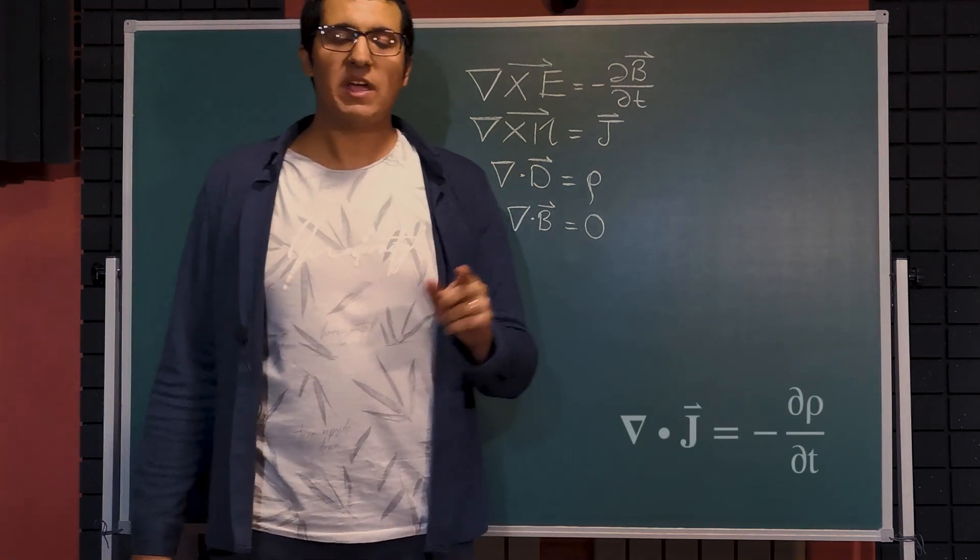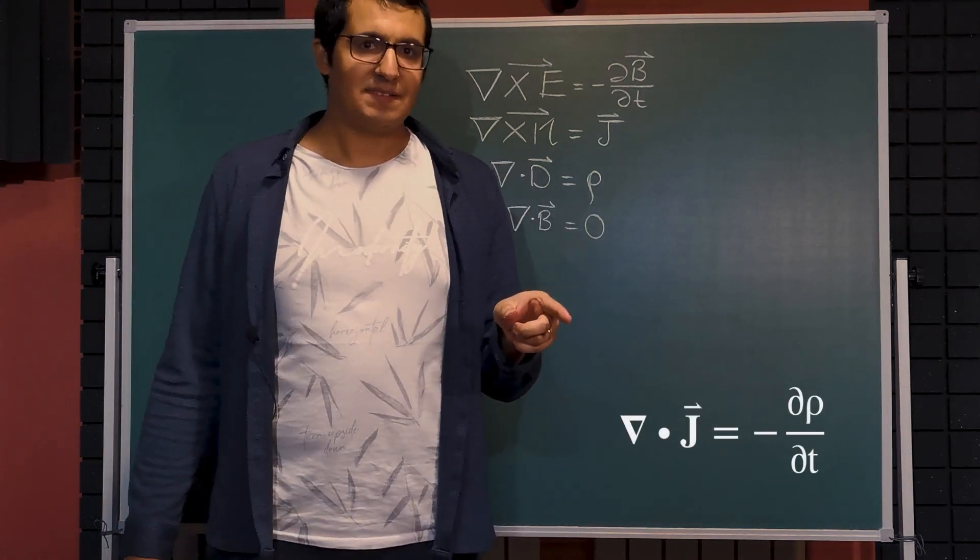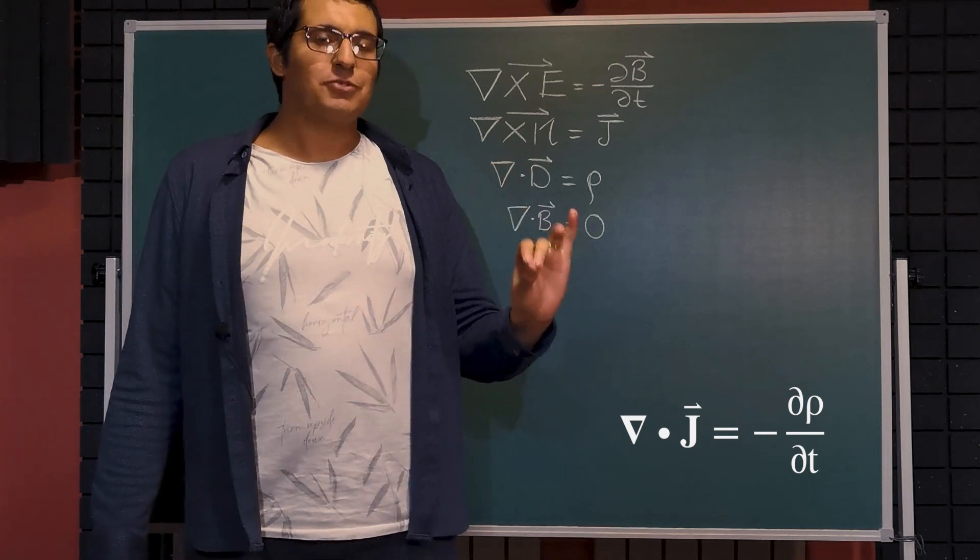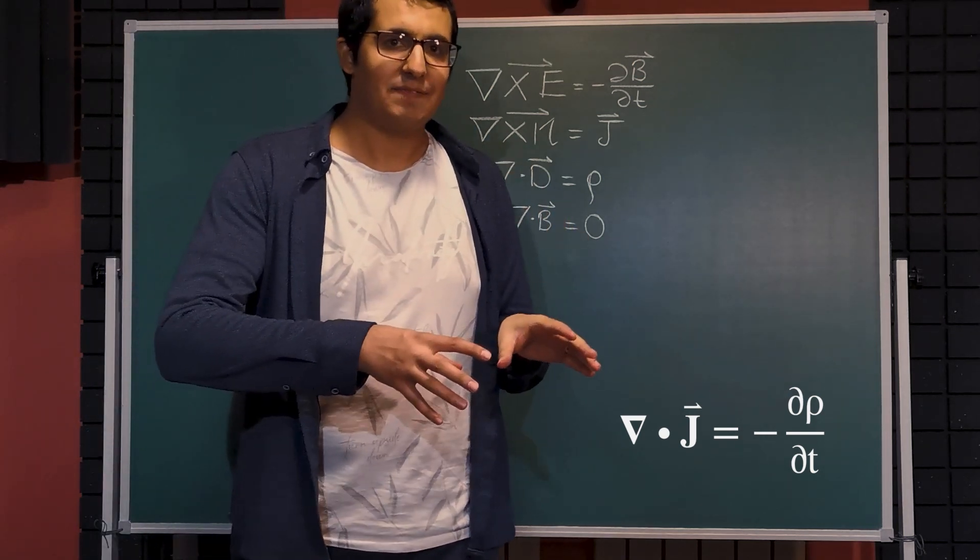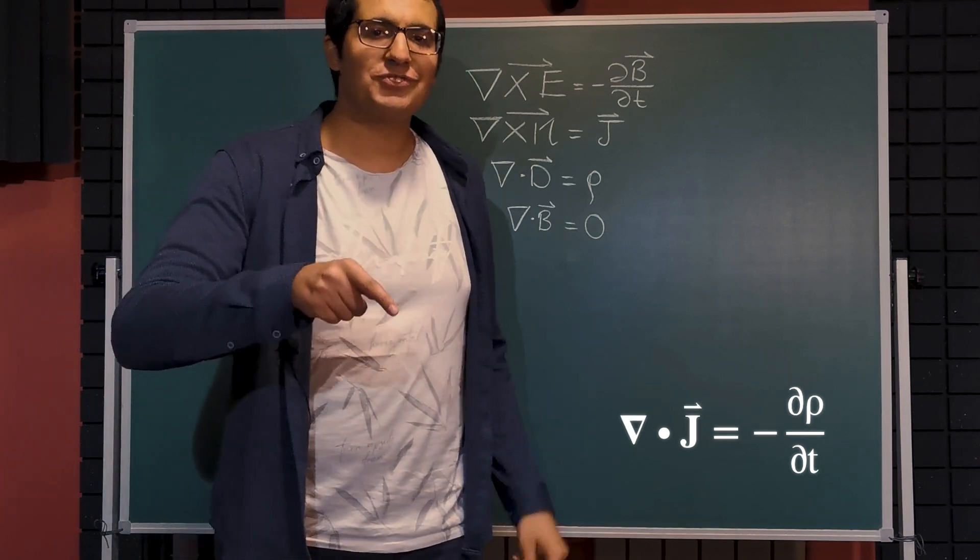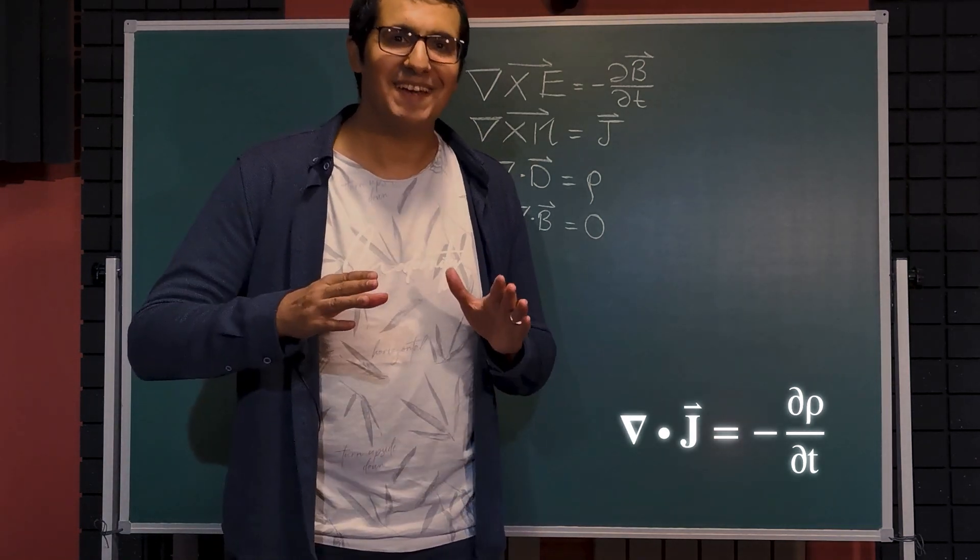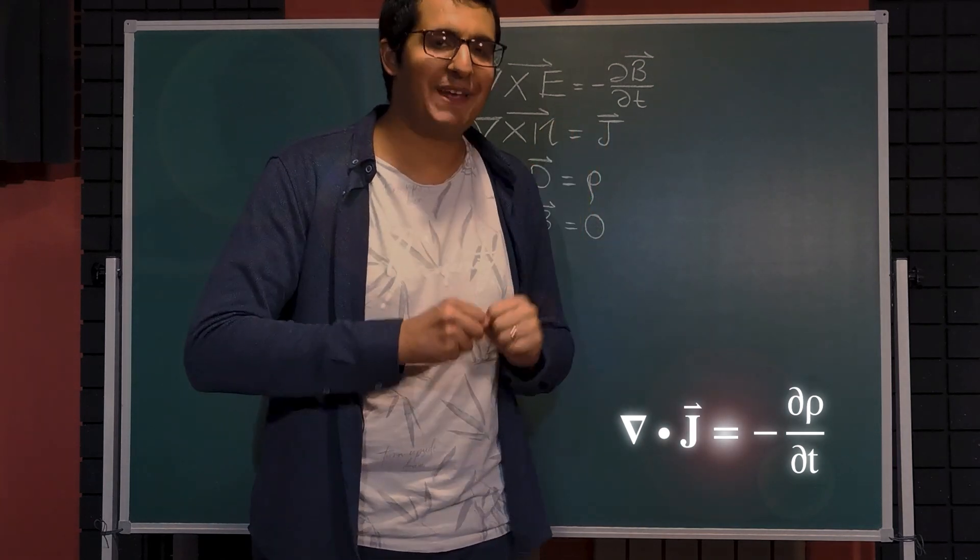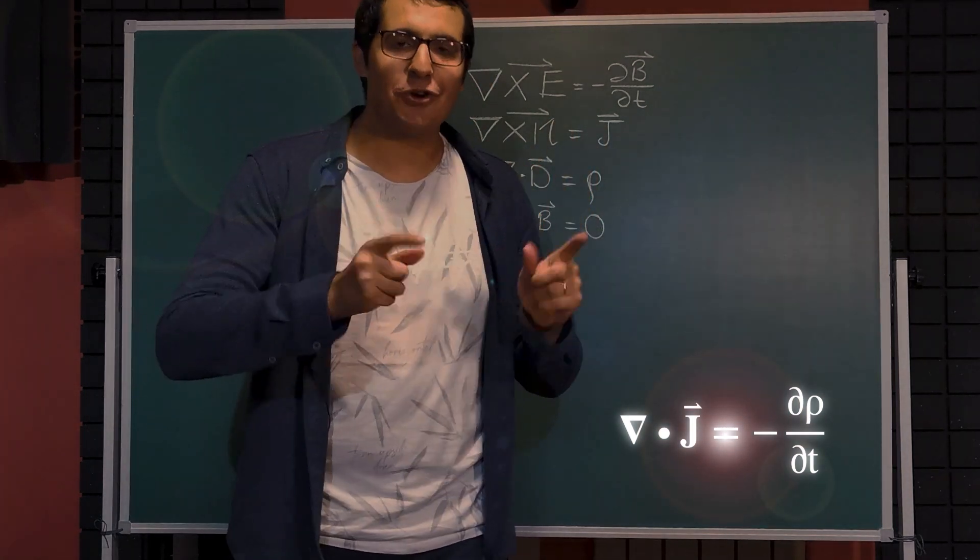If you know the continuity equation, which tells us that the negative rate of change of the charge density with respect to time will constitute a divergence of a current density. That means if there is a change of charge with respect to time, there will be electric current.